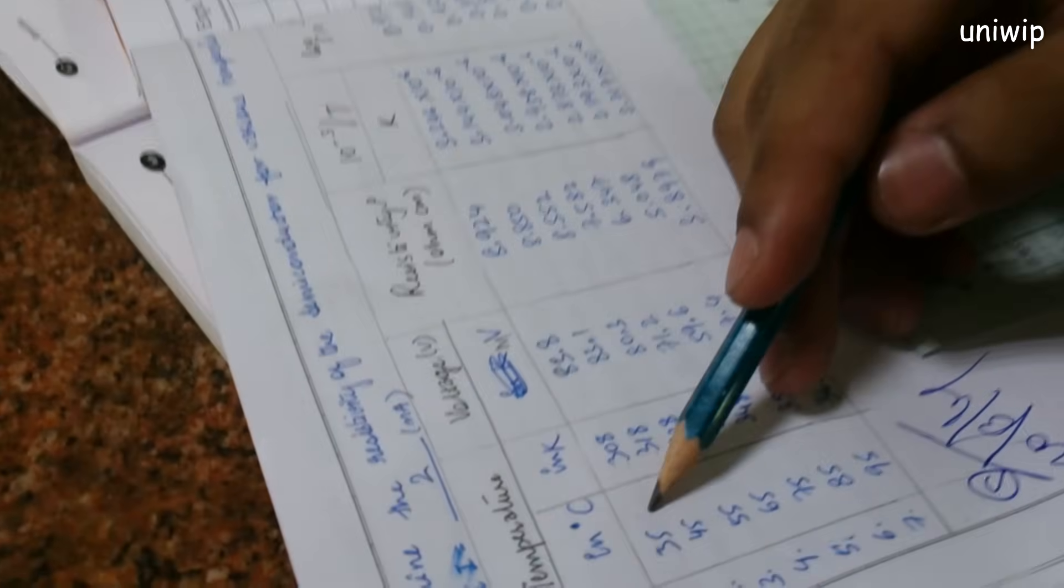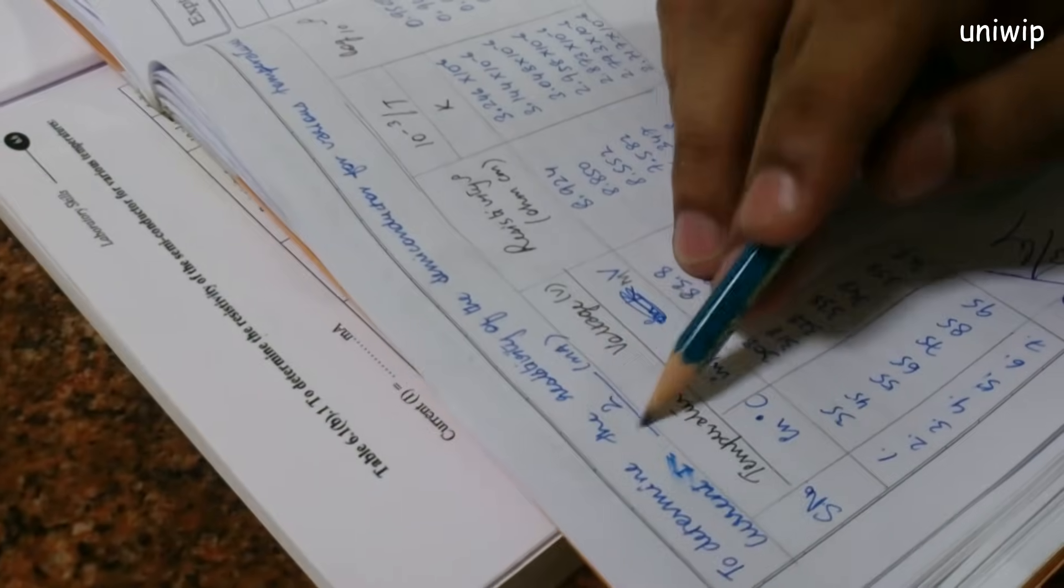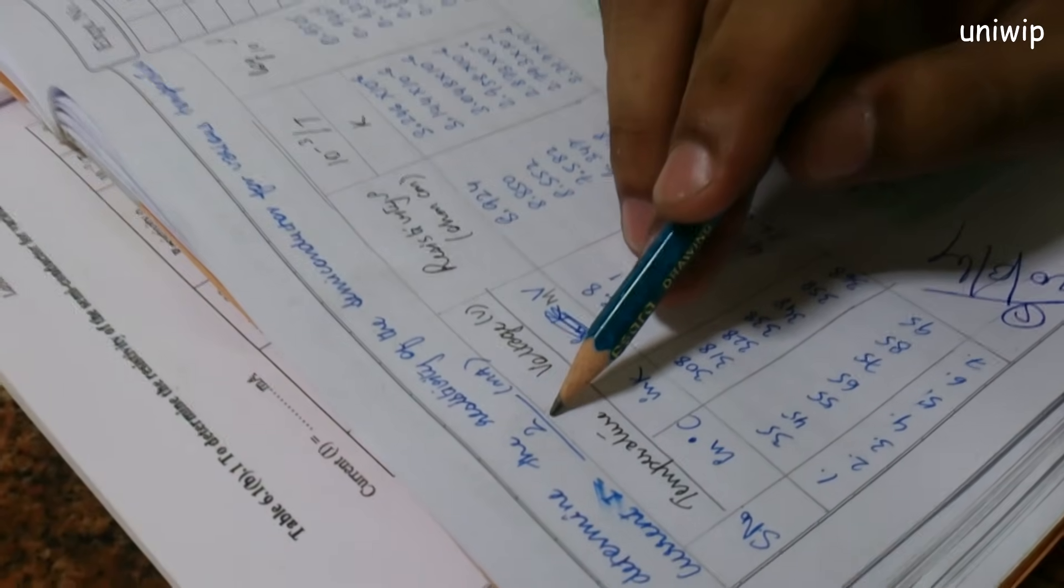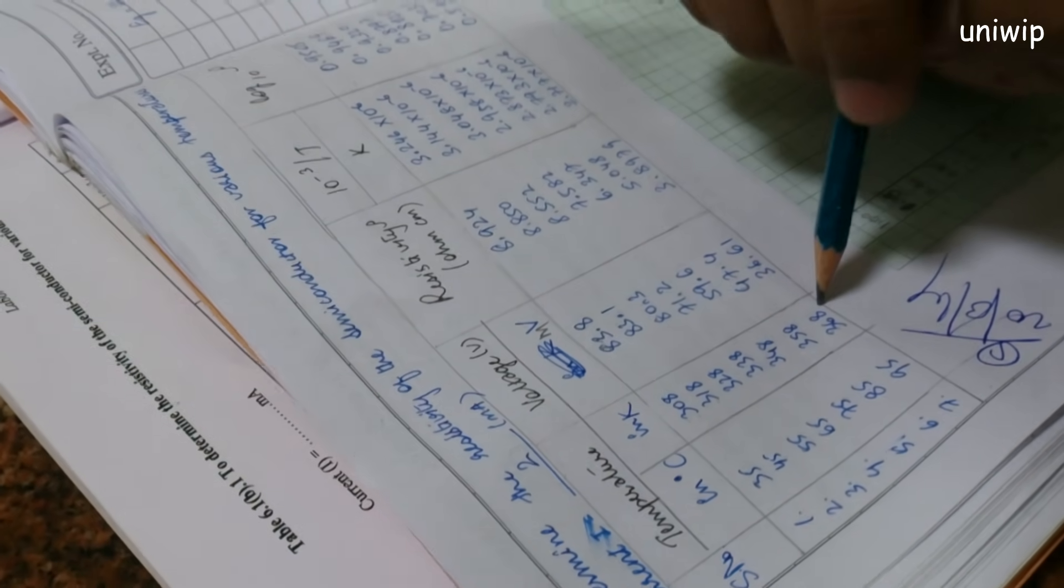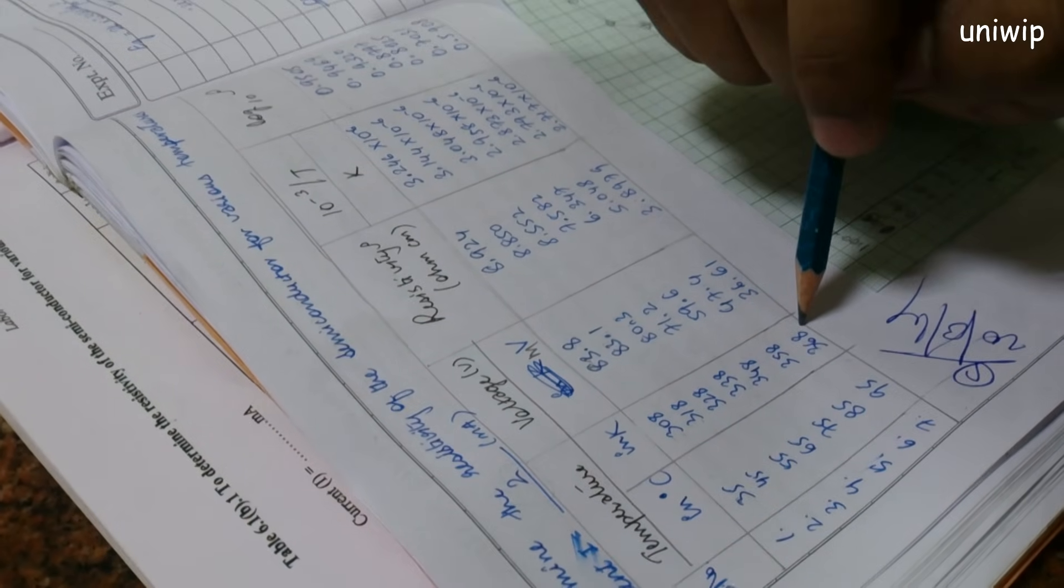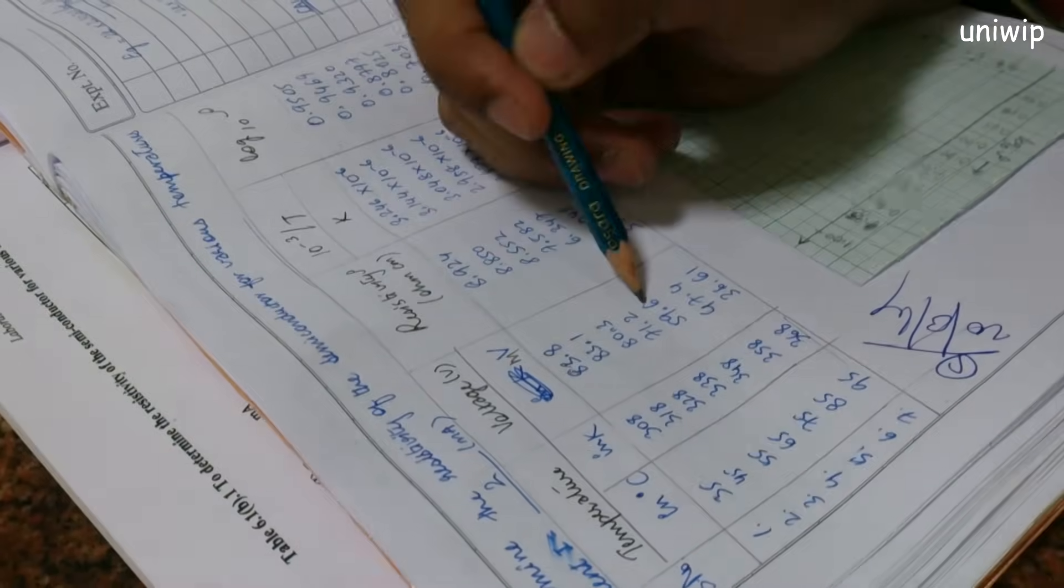As you can see in this sample over here, the temperature started from 35 and ended at 95. We supplied a constant current of two millivolts, and the corresponding Kelvin reading, which is obtained by adding 273, and this is the voltage over here.